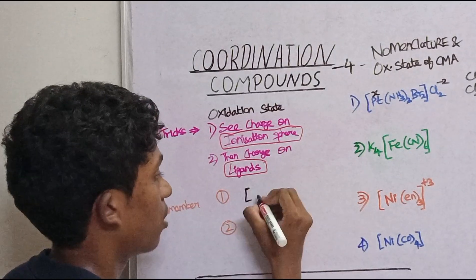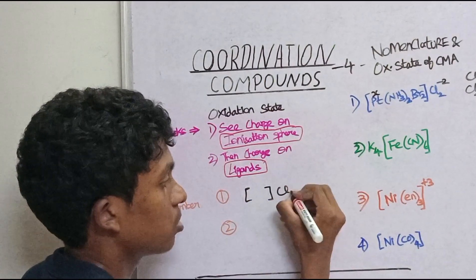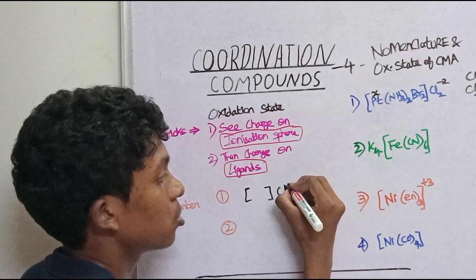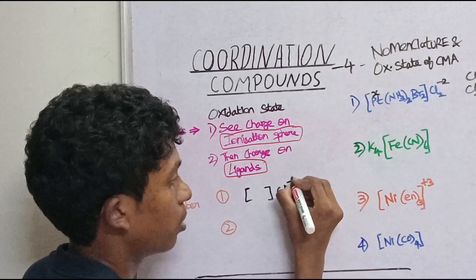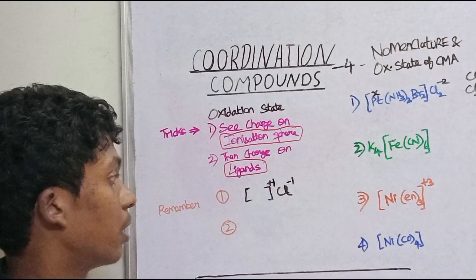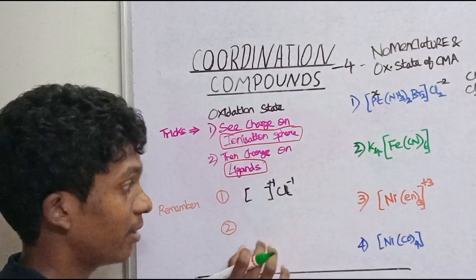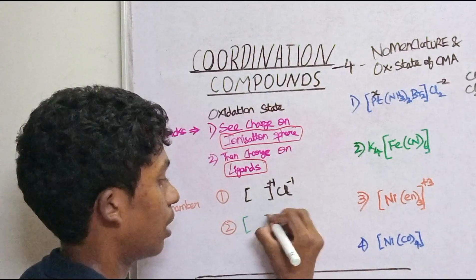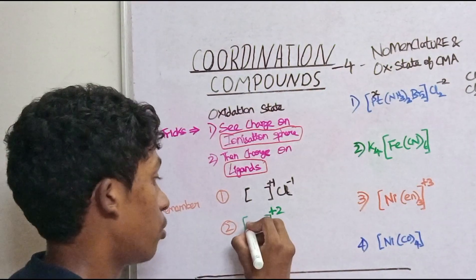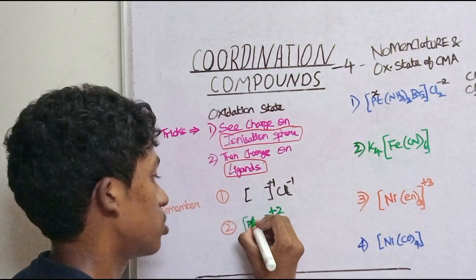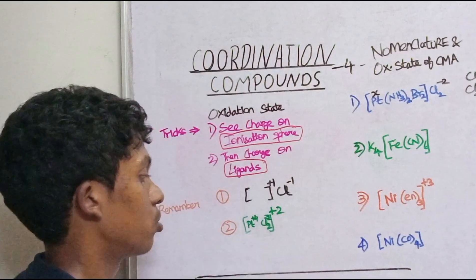If you have a coordination sphere, you can use it like NaCl. The value of Cl is minus one. If the value of Cl is minus one, then the value of the coordination sphere is plus one. So you can apply this to the coordination sphere. If you have the coordination sphere, it will have a plus 2 charge.